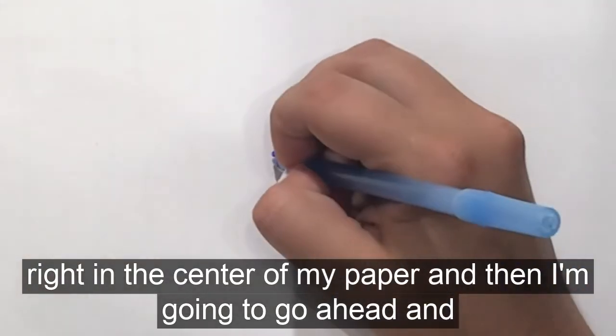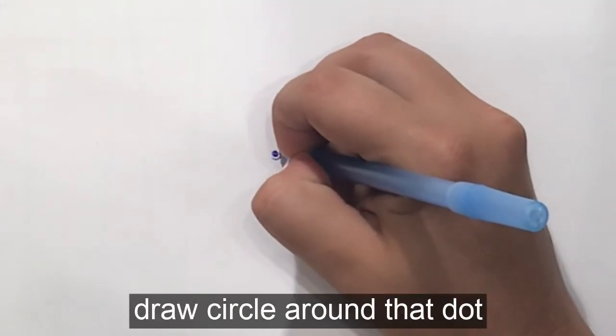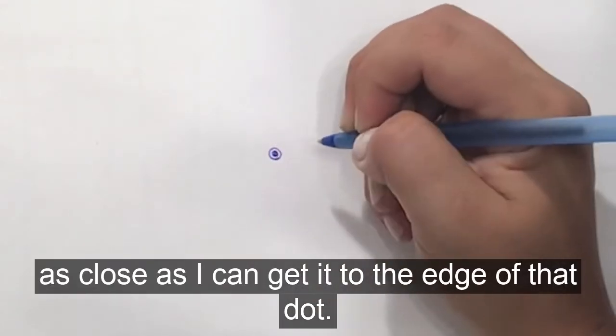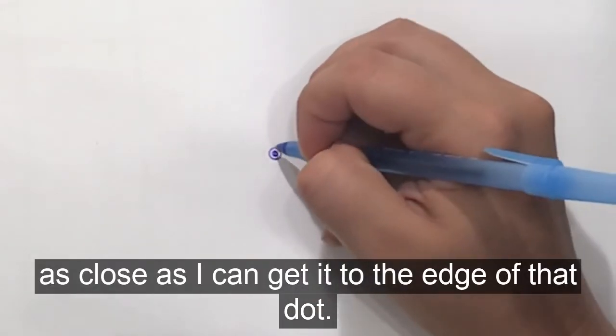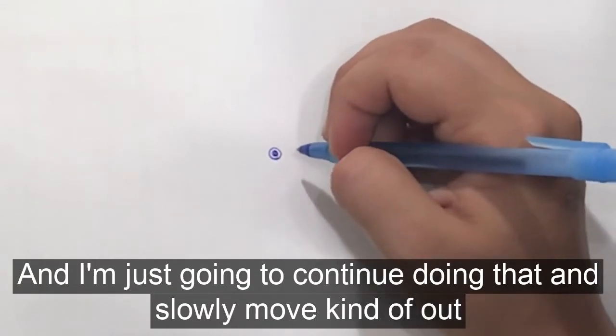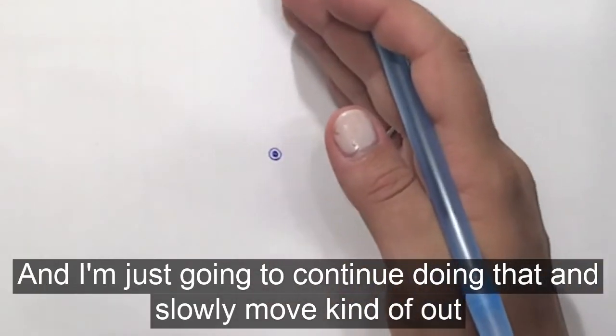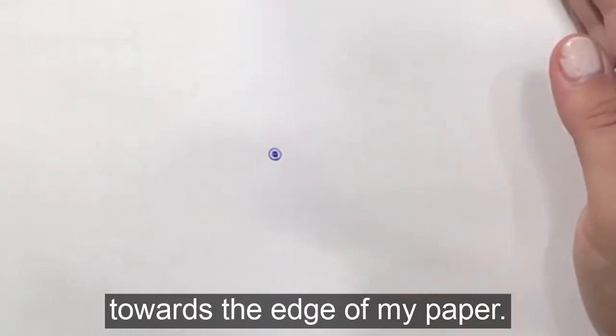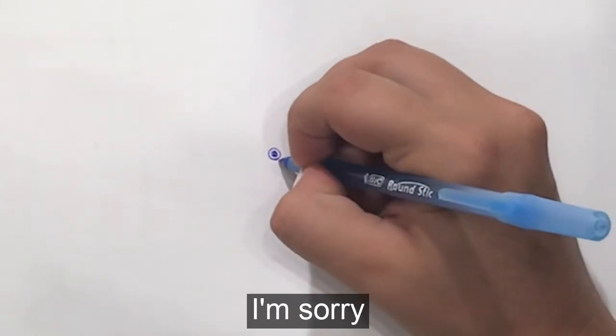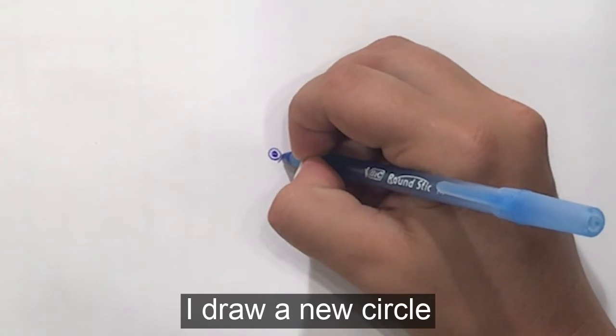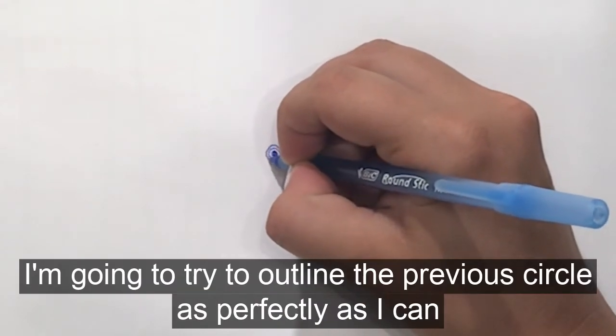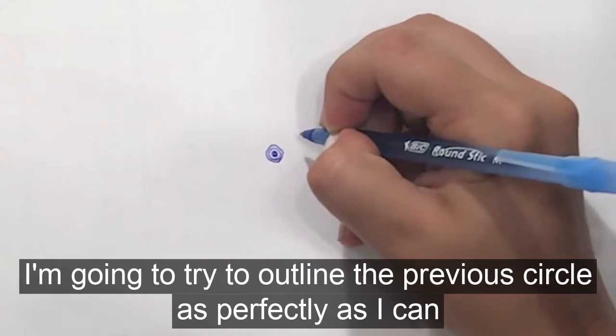And then I'm going to draw a circle around that dot as close as I can get it to the edge of that dot. And I'm just going to continue doing that and slowly move out towards the edge of my paper. Each time I draw a new circle, I'm going to try to outline the previous circle as perfectly as I can.